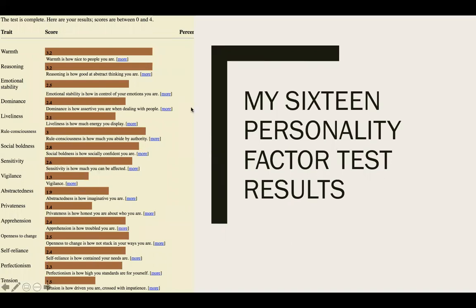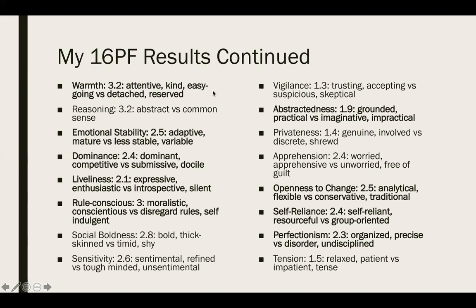These are my actual results from my free online version, scored continuously from zero to four. For warmth, I scored a 3.2 out of four, which means I'm more easygoing and attentive versus detached and reserved — I like to be very engaging when around people. For emotional stability, I scored a 2.5, meaning I'm more adaptive and mature than variable — I am in college, I'm female, I have my mood swings. Dominance I scored 2.4, which means I'm more competitive than docile — I'm very competitive but I know where the line is.